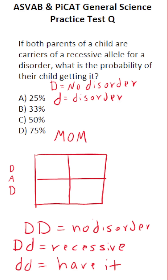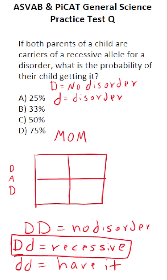Now let's go ahead and fill in the Punnett square. Both the dad and mom are recessive carriers of this disorder — they don't have the disorder, but they have the genes that can contribute to someone having it. So the dad's genotype is capital D, lowercase d. The mom's genotype is also capital D, lowercase d.